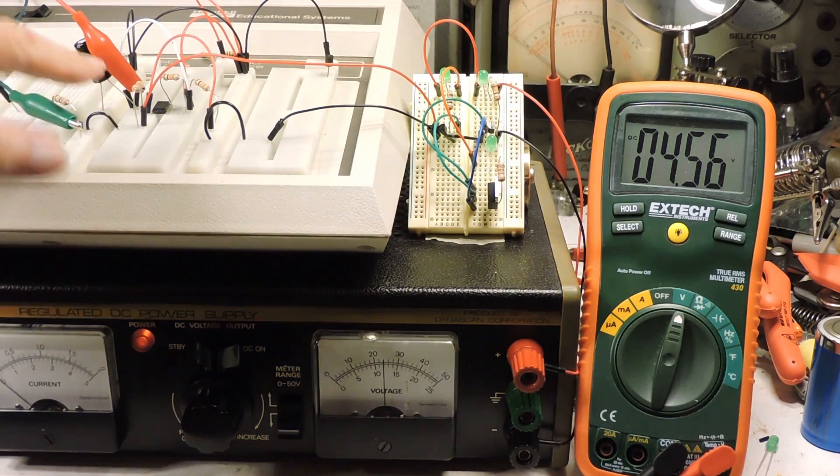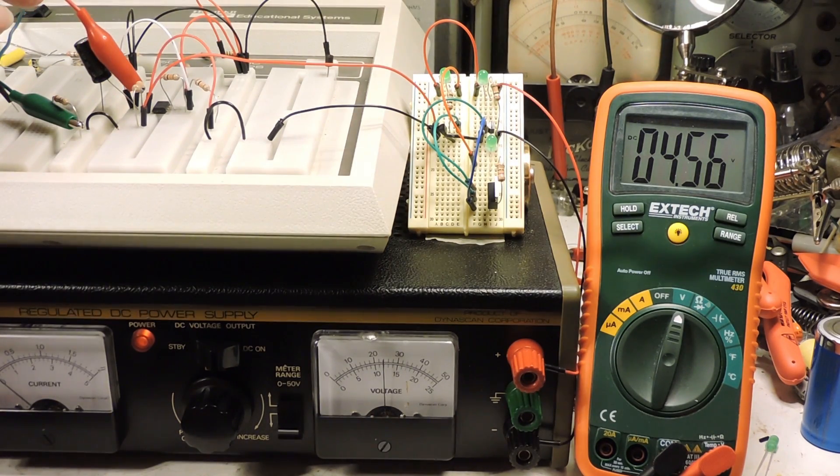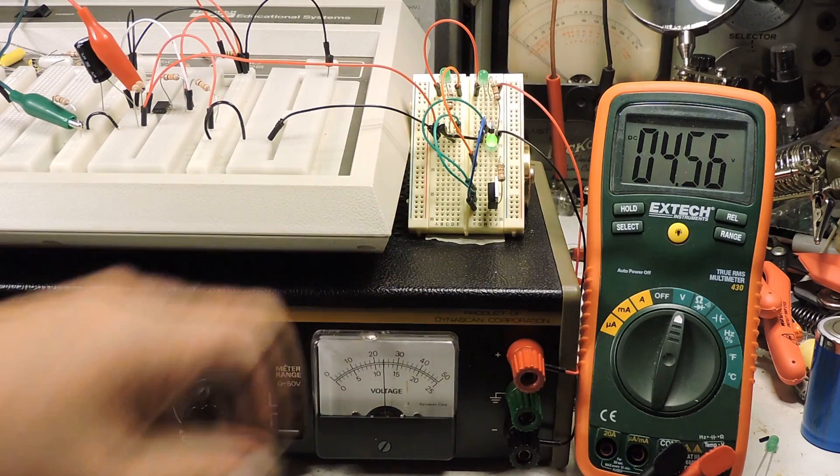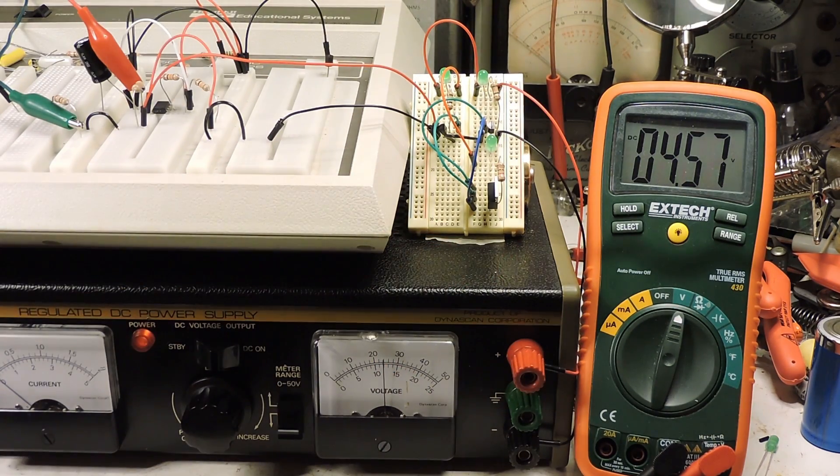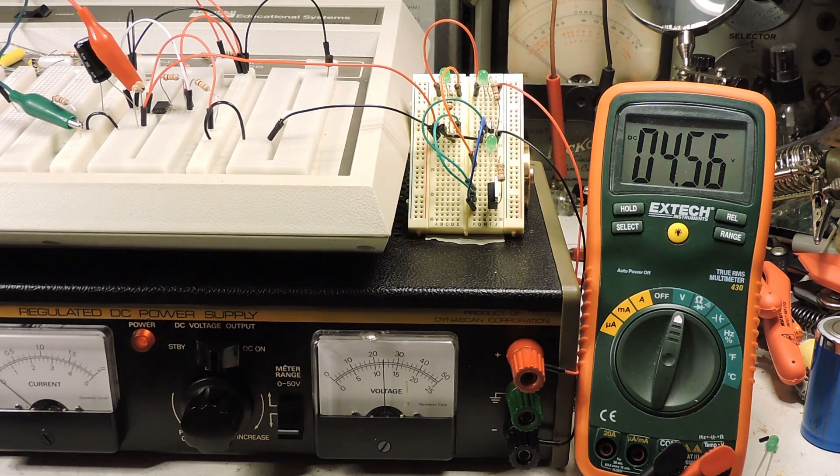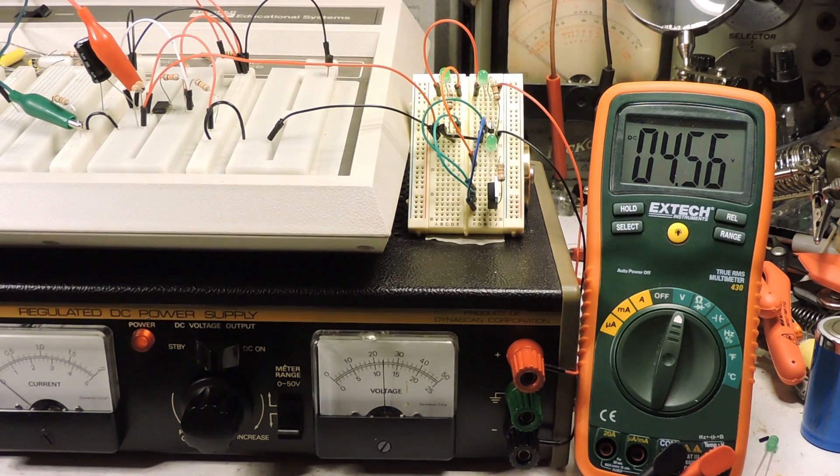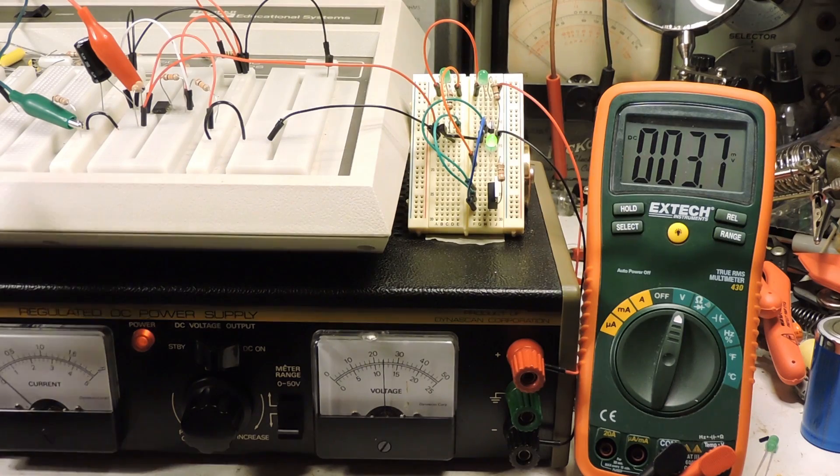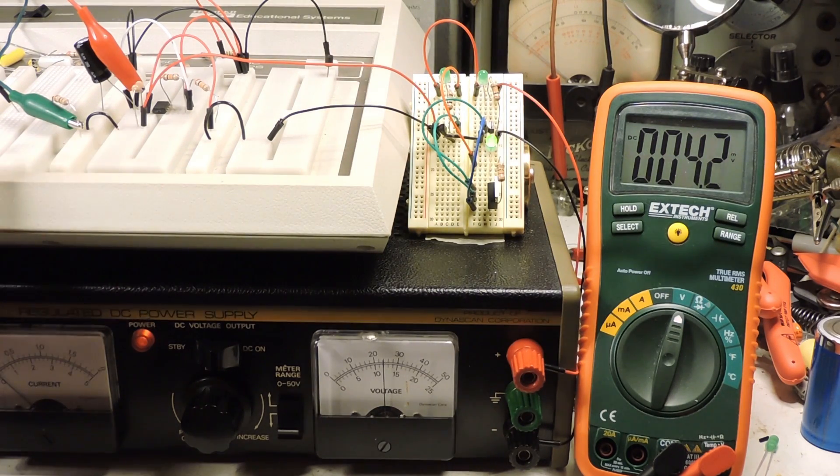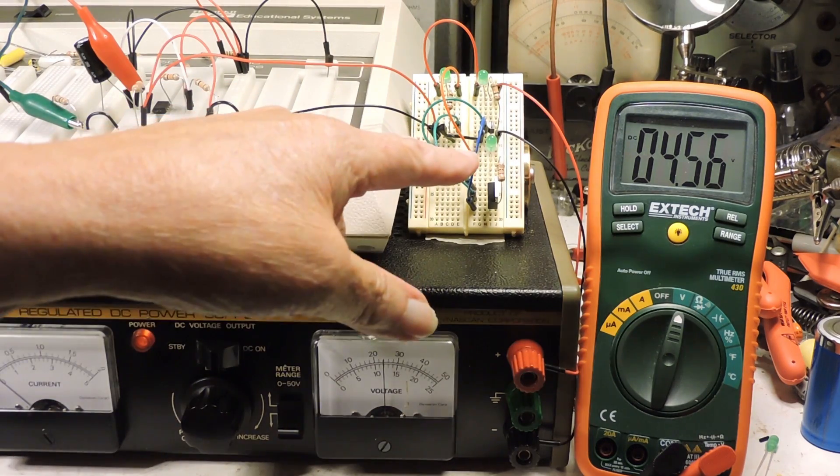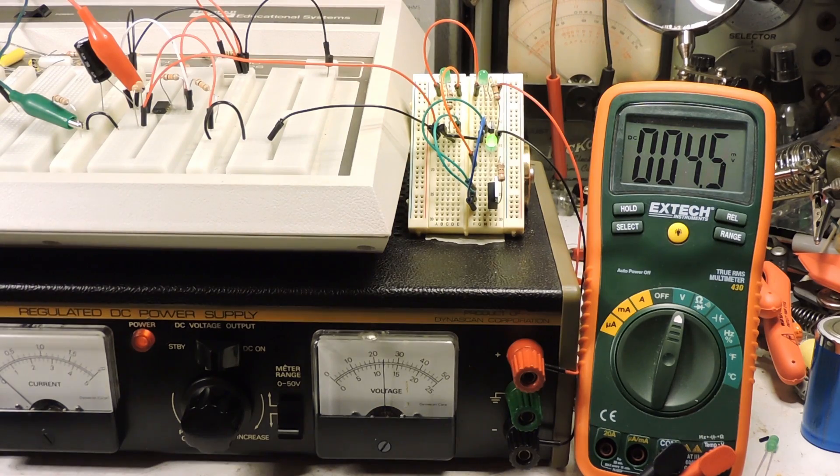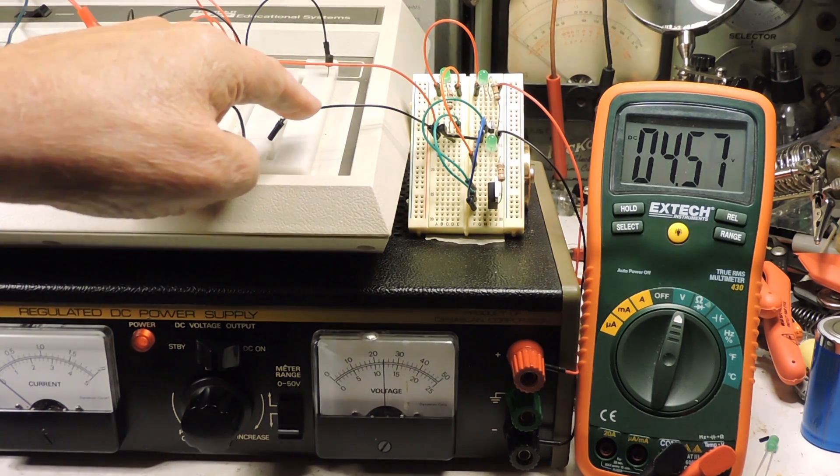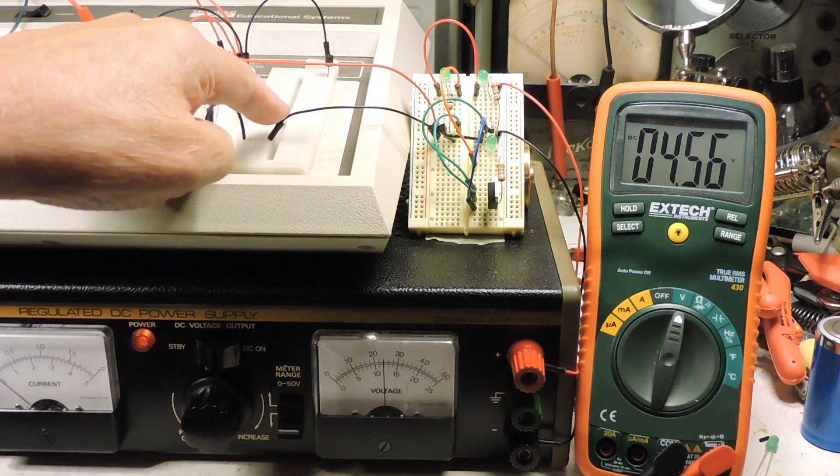You'll notice that when the 555 timer is about 5 volts, the light's off, and when this is off, this is on - negative logic. Now the 555 timer is running off the 5 volts on the trainer. This light is running off the 12 volts of this BNK power supply. The grounds are connected right here.